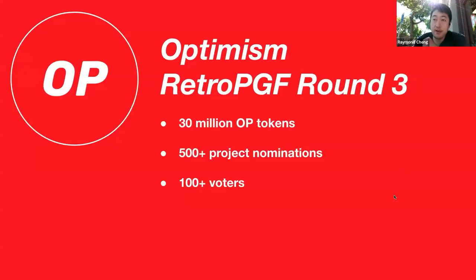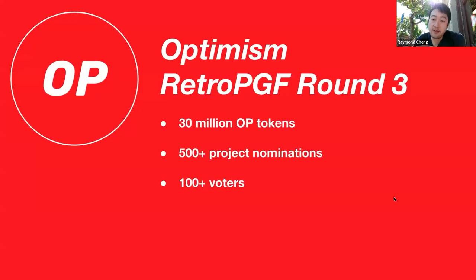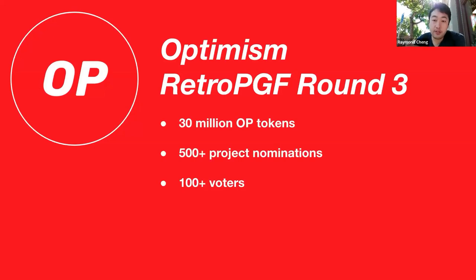Our most recent partnership was with the Optimism ecosystem. They did what they call the RetroPGF round, which means they are trying to fund the most impactful projects to their ecosystem with 30 million OP tokens — at that time worth over $100 million. They had over 500 projects involved in this round and over 100 voters in their decentralized governance mechanism, collectively trying to decide which projects were highest impact to the ecosystem.